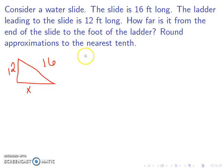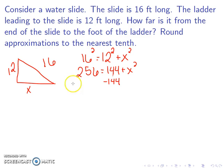We have a right triangle here, so we're going to use the Pythagorean theorem, which says that the hypotenuse squared equals leg squared plus leg squared. We'll start by doing 16 times 16 to get 256. 12 times 12 is 144. We can then subtract 144 from both sides.